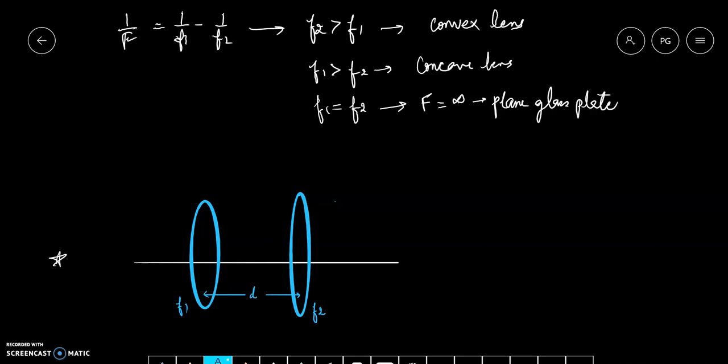Now there is a general case. If we have two lenses which are separated by a distance of small d, then in this case the focal length of the combination is given by 1 upon F equals 1 upon F1 plus 1 upon F2 minus d upon F1 F2. The derivation of this formula is out of the scope of 12th physics NCERT.